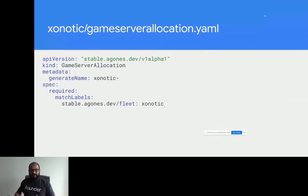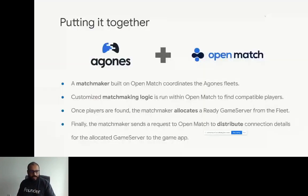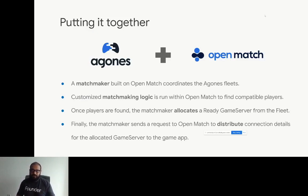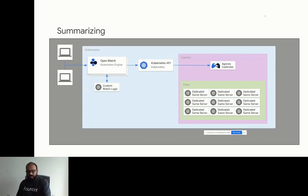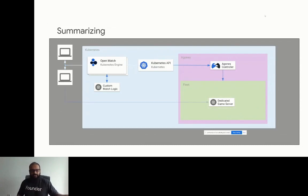Combining Agonis with Open Match gives you much more advanced features. Open Match allows you to write custom match logic to find compatible players. Together, Agonis and Open Match let you build a robust game server backend in a very short period of time. The flow is: request comes to Open Match, which talks to Kubernetes, which talks to the Agonis controller, which finds and allocates a dedicated game server from the fleet.